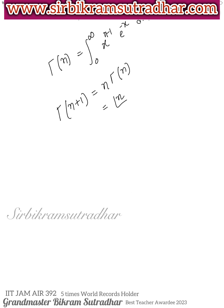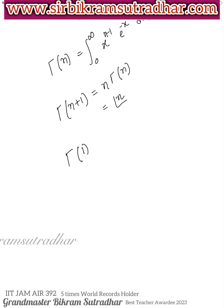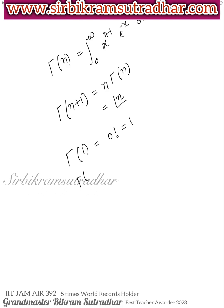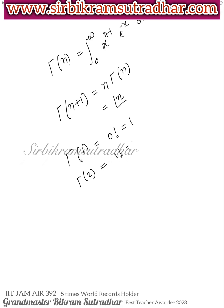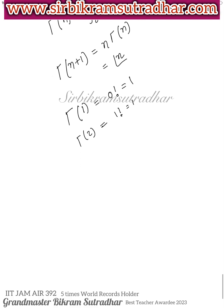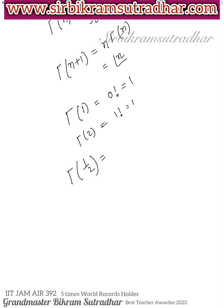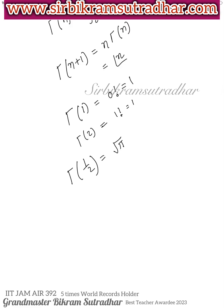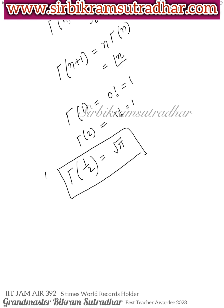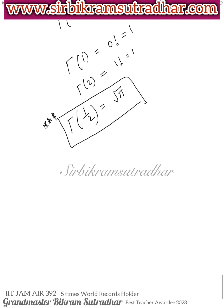Gamma is basically the factorial extended for real numbers and even complex numbers. Gamma(1) = factorial 0 = 1. Gamma(2) = 1. Aur jo sabse important hai — agar Gamma half hota hai, Gamma(1/2) ka answer hoga root pi. Baccho, yahi hai sabse main part — Gamma(1/2) = √π.